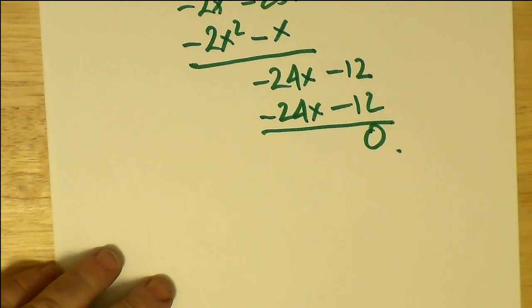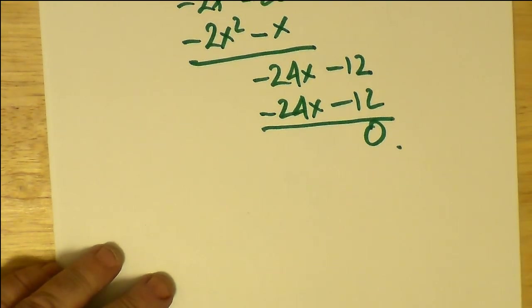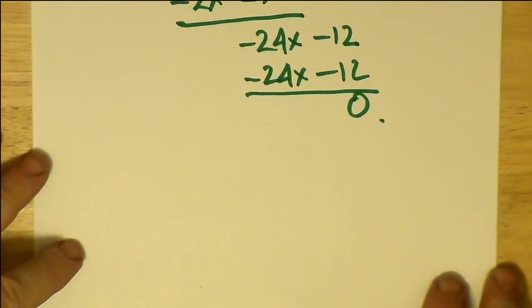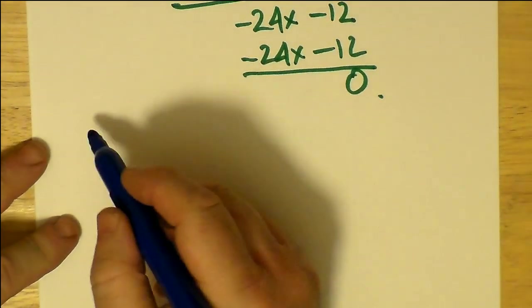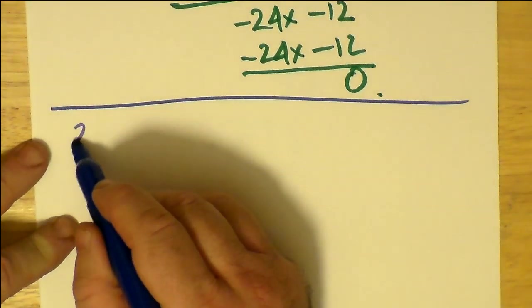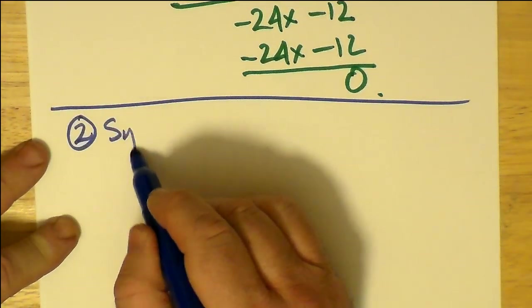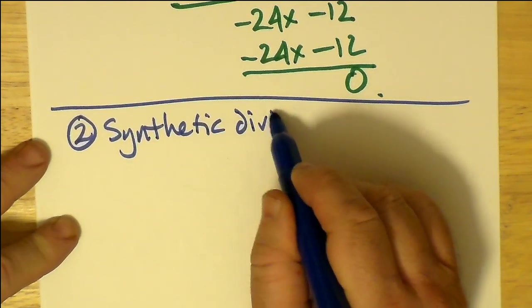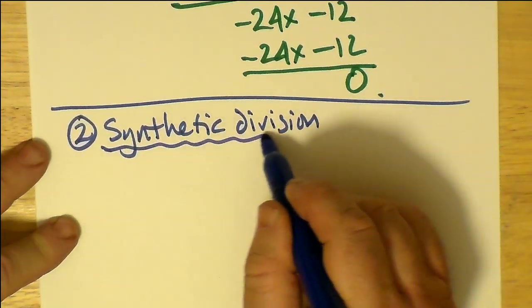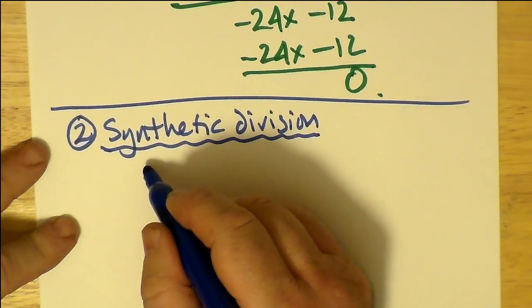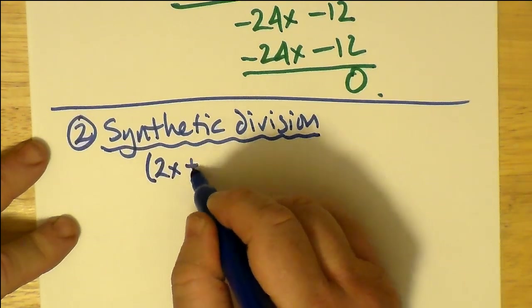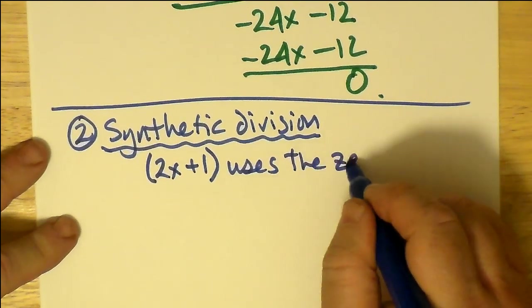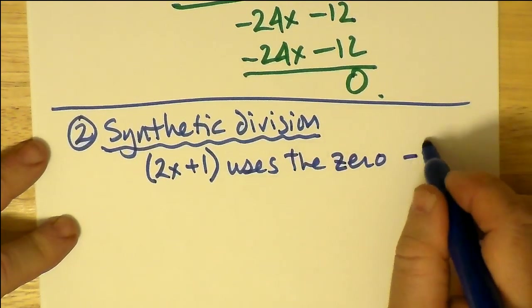Let's try now comparing this result, which seems to have worked out perfectly, to synthetic division. Recall that in order for synthetic division to work, we need a single number.